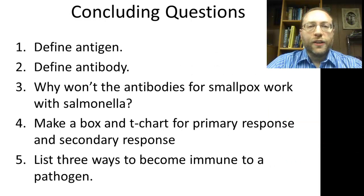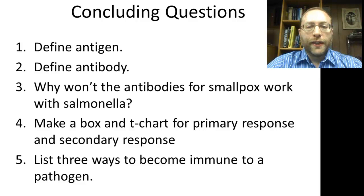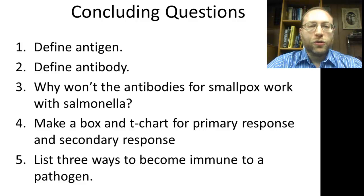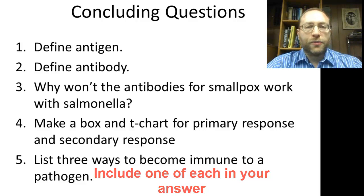Now we come to our concluding questions. Number one: define antigen. Number two: define antibody. Number three: why won't the antibodies for smallpox work with salmonella? Number four: make a box-and-T-chart for primary response and secondary response — put similarities inside the box, and differences under each heading. Number five: list three ways to become immune to a pathogen, which can be through active immunity or passive immunity. That concludes this vodcast, and I'll see you in class tomorrow. Bye.